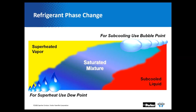I want to briefly discuss dew point and bubble point. Many of the new refrigerants today are mixtures — a blend of different refrigerants in specific proportions — and what happens with blends is they condense and boil at different temperatures. They start to boil at the bubble point and finish boiling at the dew point. The easiest way to use PT charts for a blend refrigerant that has glide: anytime you're measuring superheat, use the dew point; if you're measuring subcooling, use the bubble point.